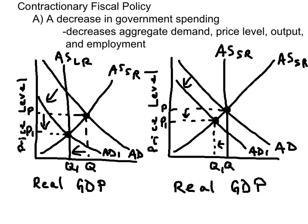Ideally, the government should pursue a contractionary fiscal policy when the economy is experiencing inflation — demand-pull inflation. When the government decreases its spending, aggregate demand shifts to the left and could restore full employment in the short run. If the economy is already fully employed and the government cuts spending, that can cause recession.